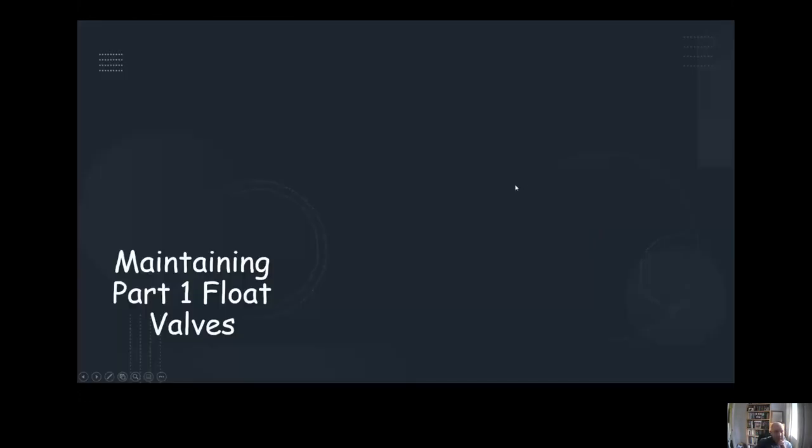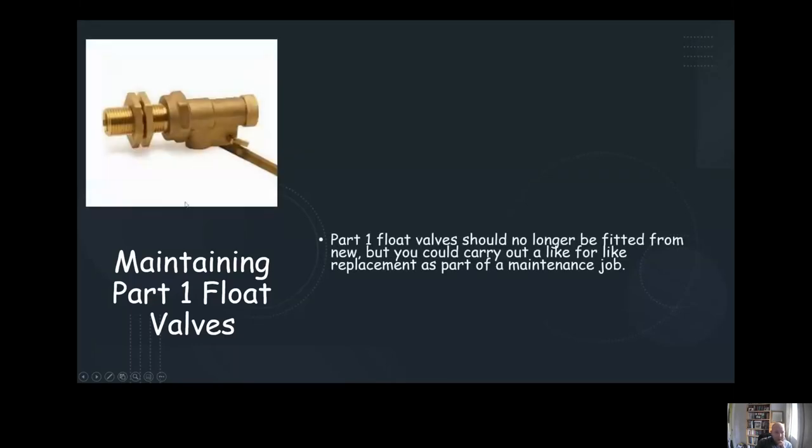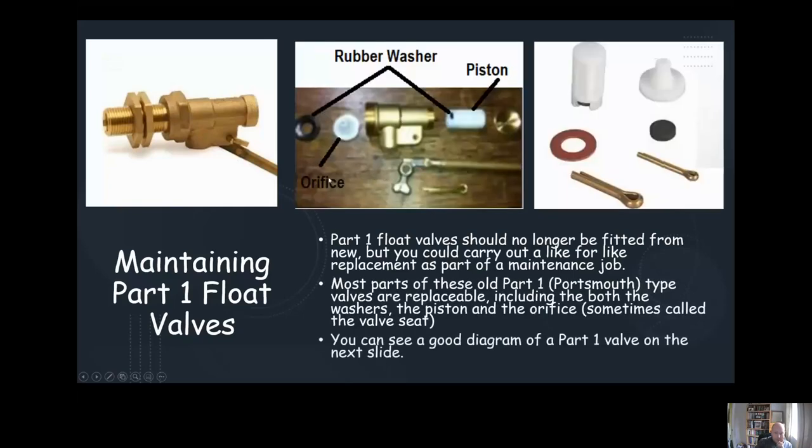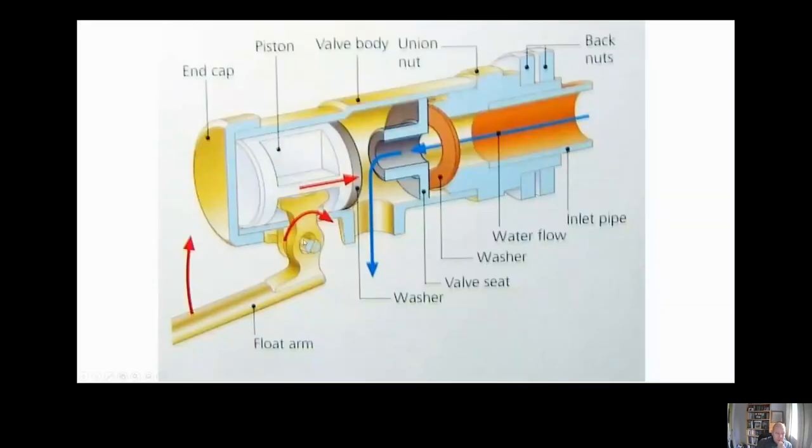I'm going to look now at maintaining float valves. Maintaining a part one float valve, also known as a Portsmouth type float valve. There's a few parts which can be maintained or replaced: you've got an orifice which could block up so you might need to clear that out or replace it, and there's rubber washers. This is the main washer which is likely to need to be replaced. It's fitted inside the cistern, you can push it out from the piston and replace it with a new one. The part one float valve outlet's always at the bottom. It's known as a Portsmouth type and it's always made out of brass.